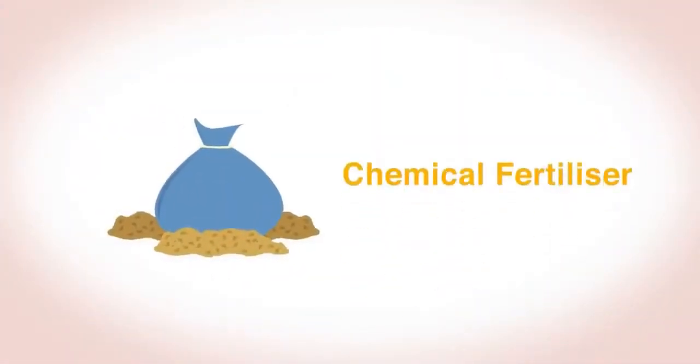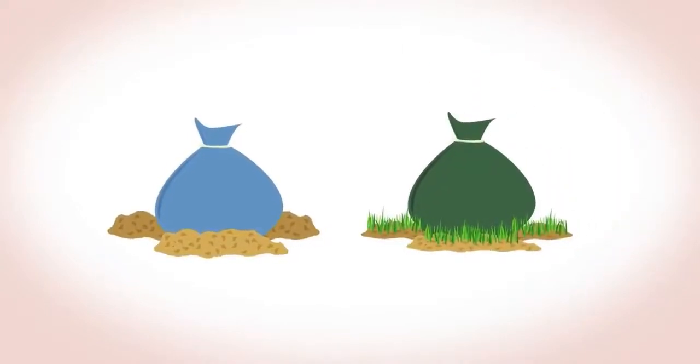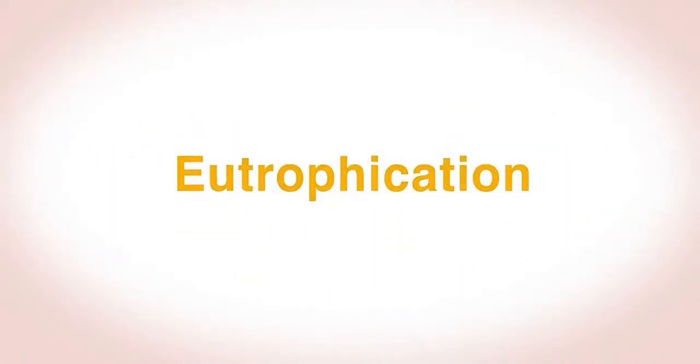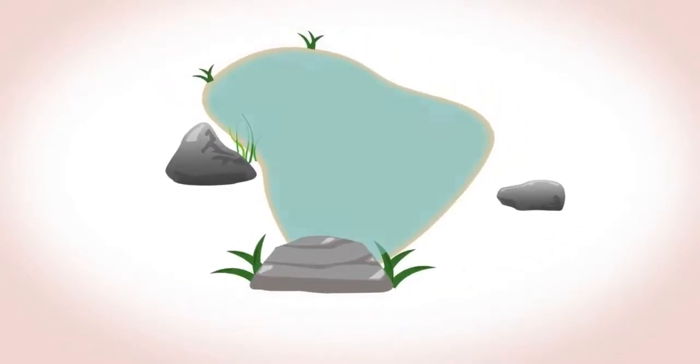Chemical fertilizers are much more soluble in water than organic manure-based fertilizers. So heavy rain can wash them into streams and lakes causing eutrophication.